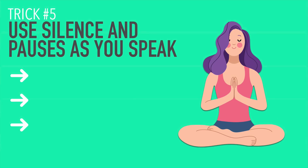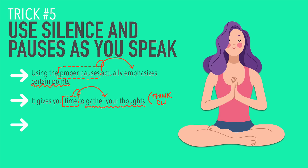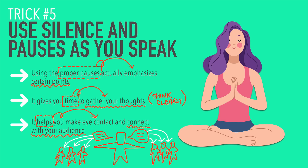Number five: use silence and pauses as you speak. Using the proper pauses actually emphasizes certain points. I just paused, and it emphasized the point I'm making right now. It gives you time to gather your thoughts so that you can think in a clearer way. It also helps you make eye contact and connect with your audience. All of these things are important to making you feel more confident when you speak in English.